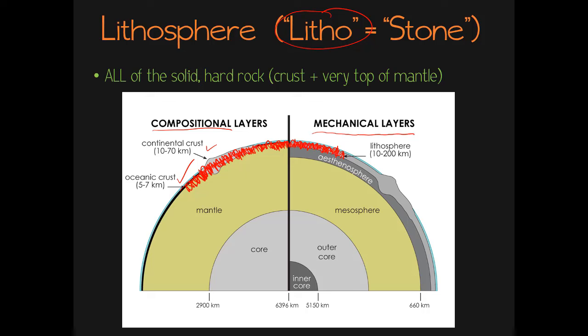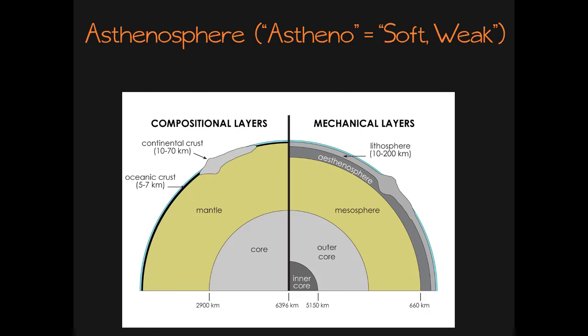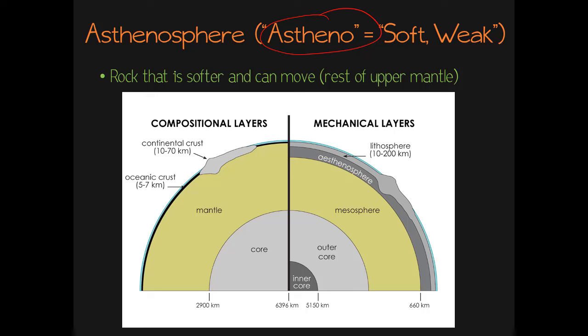Underneath the lithosphere is the asthenosphere, and astheno means soft or weak. So this is going to be that softer rock that's been heated up just enough that it can be squished and moved. The asthenosphere is this layer right here — it includes the rest of that upper part of the mantle. Underneath the asthenosphere is a layer called the mesosphere, but we're not going to really be looking at that layer, so don't even worry about remembering its name.